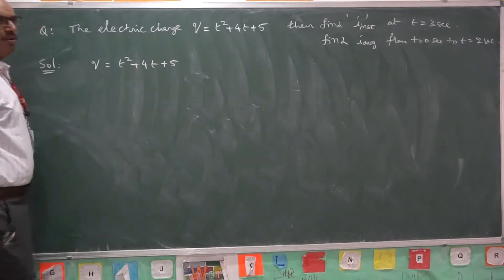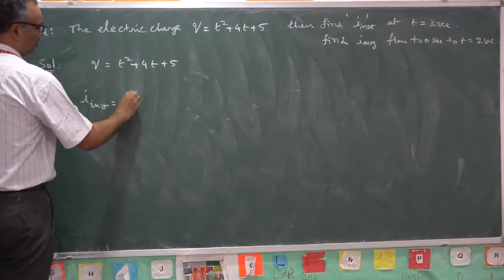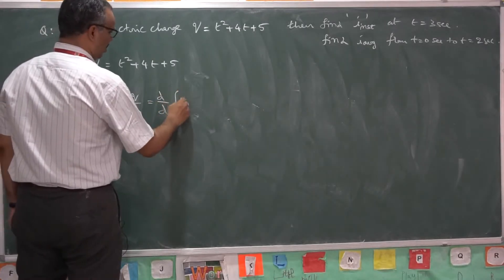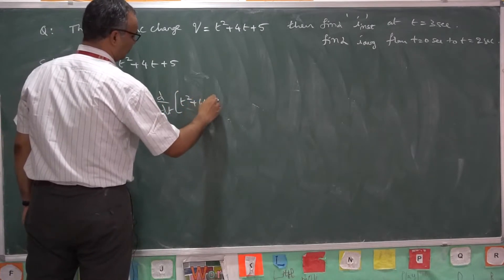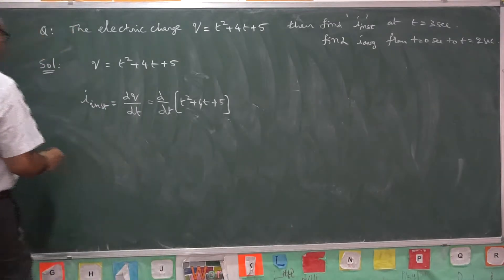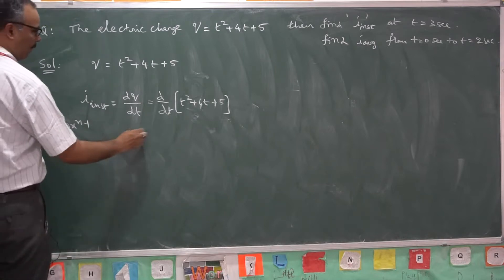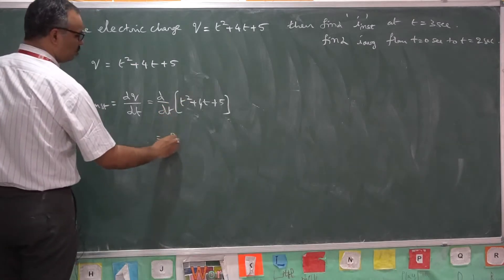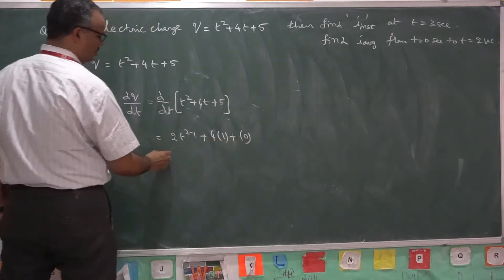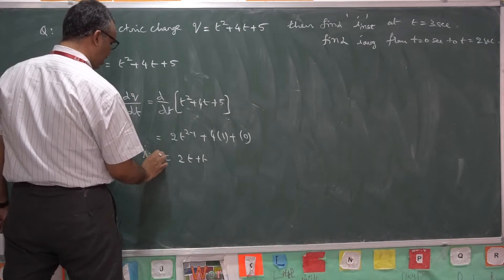Whenever we want instantaneous current, it is the derivative of charge with respect to time — that is d/dt of (t² + 4t + 5). Using the derivative formula d/dx of xⁿ = n·xⁿ⁻¹, the derivative of t² is 2t, derivative of 4t is 4, and derivative of a constant is 0. So you get 2t + 4 as instantaneous current as a function of time.